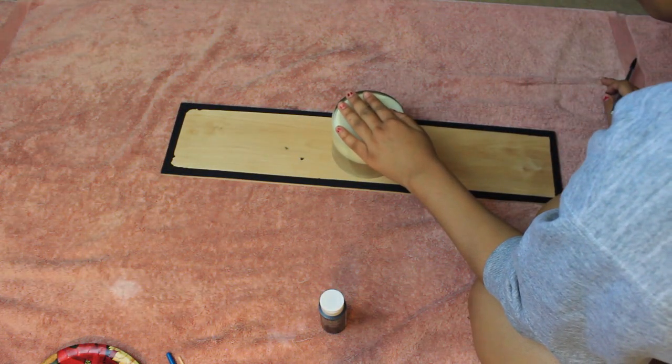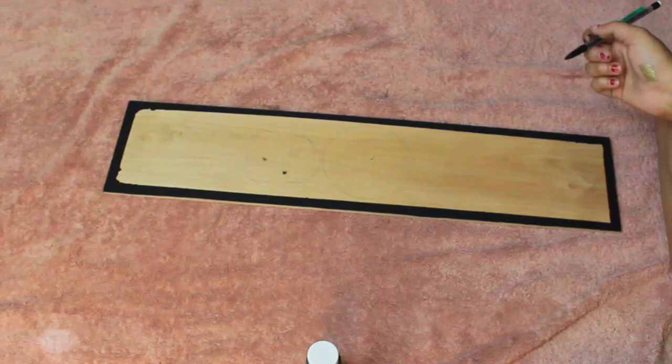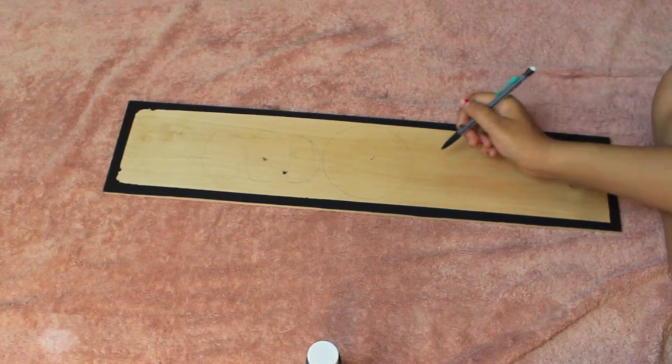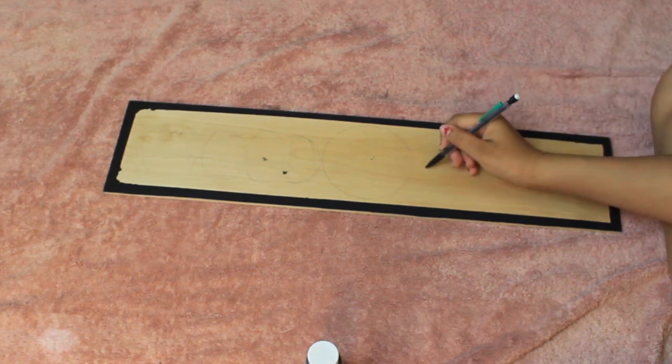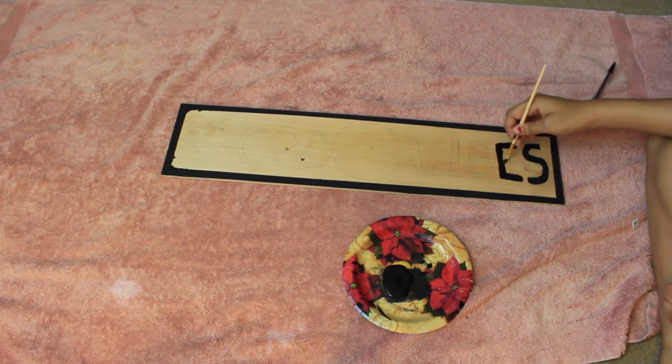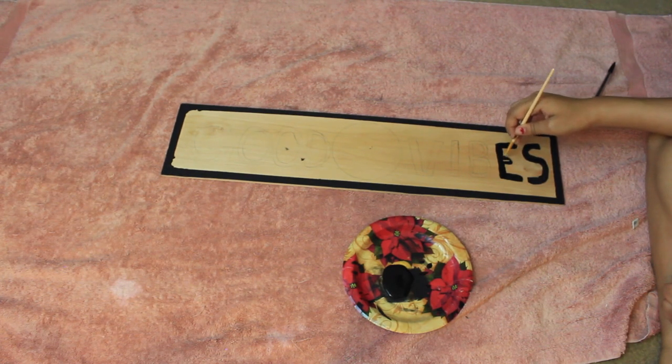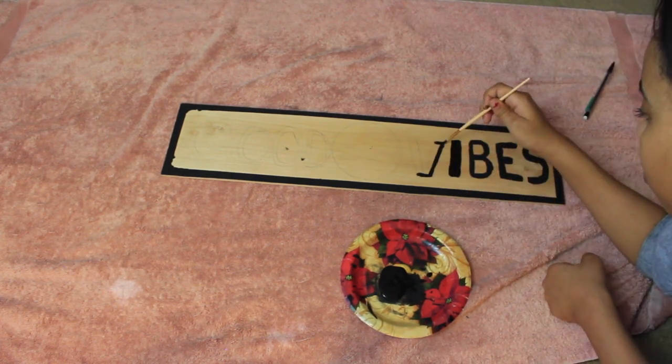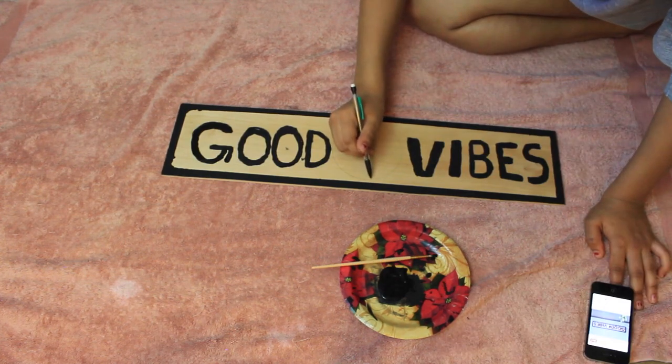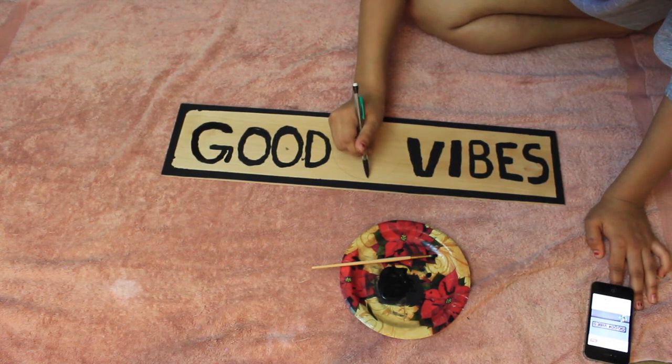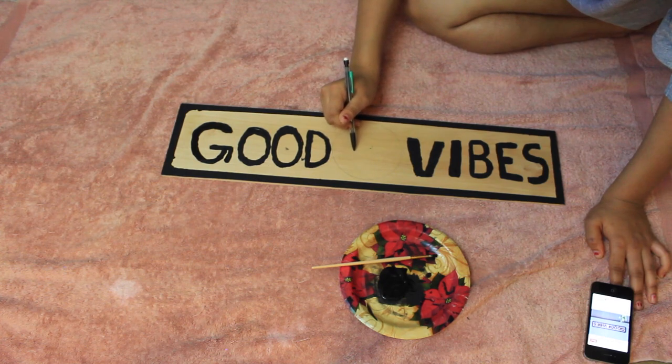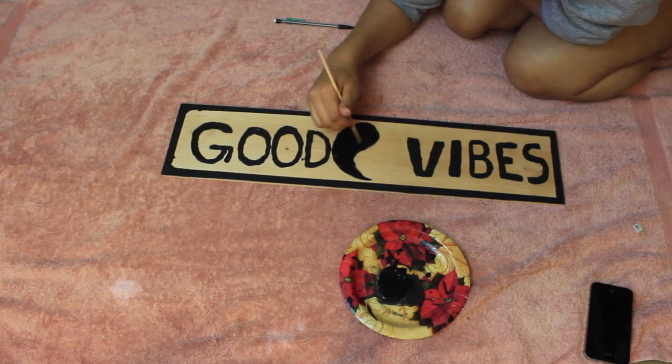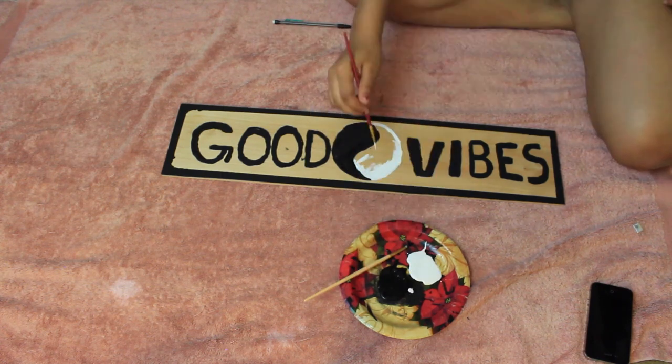Then I'm going to trace around my candle to make a perfect circle for my yin yang sign. I just freehand the word good vibes. You can use stencils if you don't really want to freehand it but I freehand it. Now I'm just painting in the inside of all the letters with black paint using a paintbrush. Now I'm just painting in the inside of my yin yang sign using black paint and on the other side I'll be using white paint. And that's it.